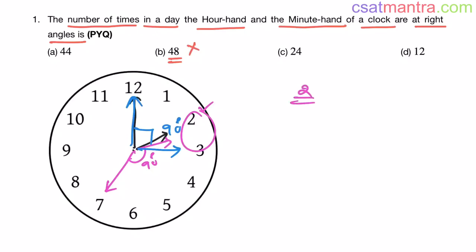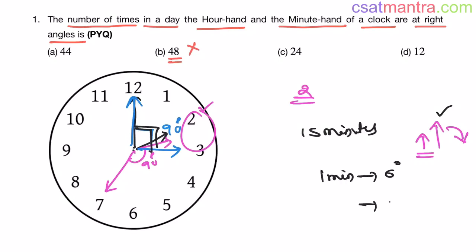One important observation: when the hour hand and minute hand are at 90 degrees, the time difference between them is always 15 minutes. If you fix the hour hand at 12 a.m. and only move the minute hand at 6 degrees per minute, it takes 15 minutes to cover 90 degrees. So whenever the hour hand and minute hand are at 90 degrees, the time gap between them is always 15 minutes.